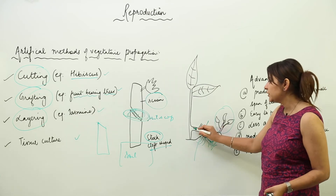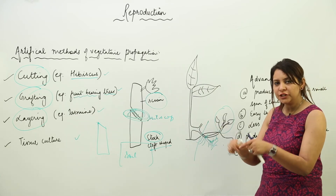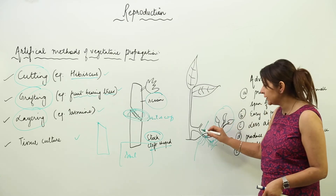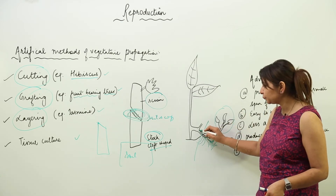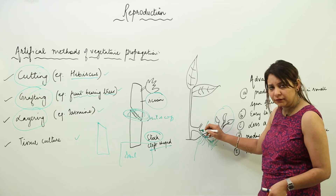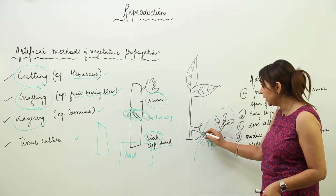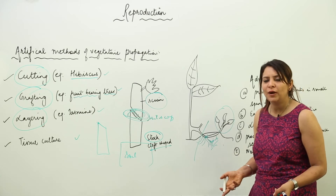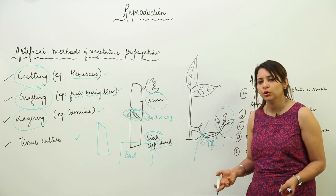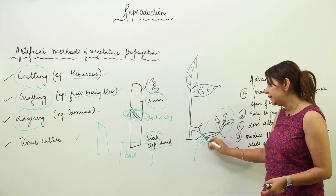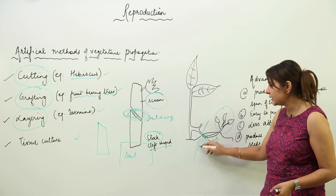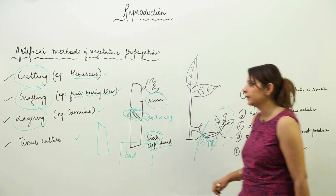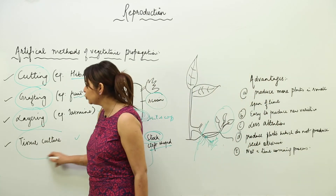We pull one of the lateral branches and bury it in soil such that the upper end is left free and much of the part is in the soil. We water it and provide everything required for plant growth. In a short span of time it develops roots, so we cut this portion and use it as a separate individual plant — it has its own roots, shoot, and leaves. This is layering.